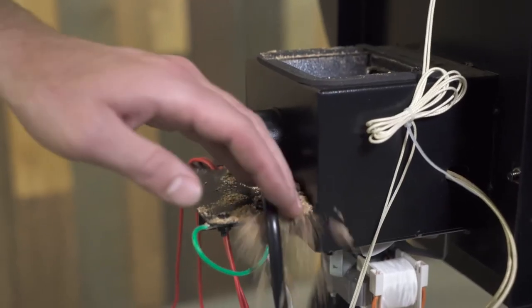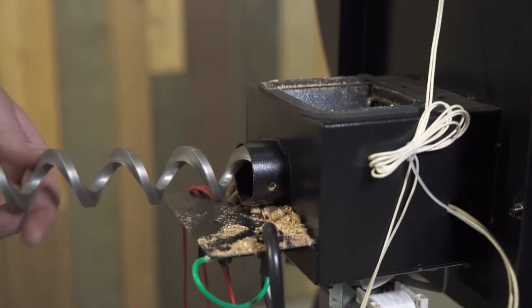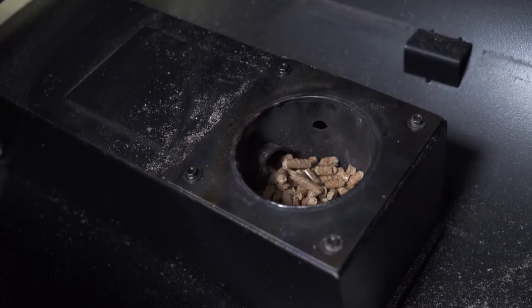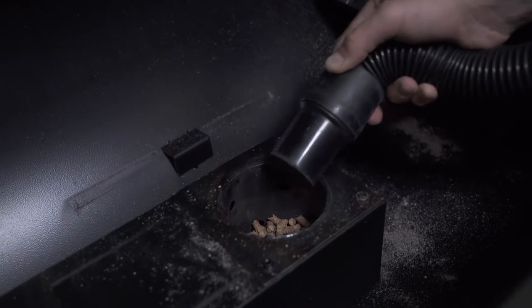After removing the auger, push all the loose pellets out of the auger tube and into the firepot. Use a shopvac to help remove all the pellets from your grill.